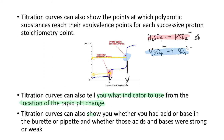Titration curves can also show you whether you had an acid or base in the burette or the pipette. A curve starting with a low pH indicates the conical flask contained an acid — and if it starts below pH 1, it's probably a strong acid. You can tell you're adding a base because the pH is going up. Once you're at excess, the final pH can also indicate whether you've added a strong or weak base.